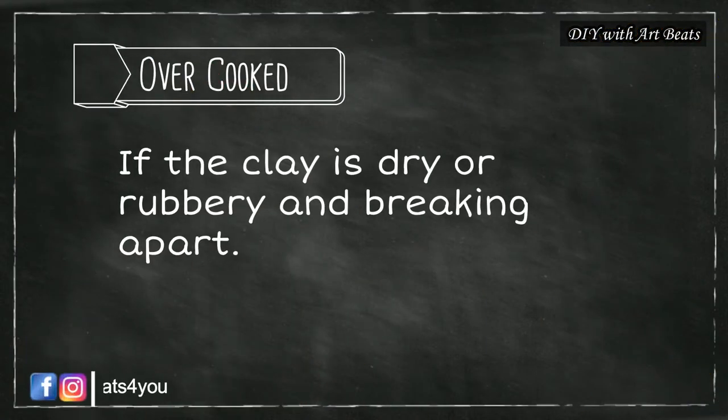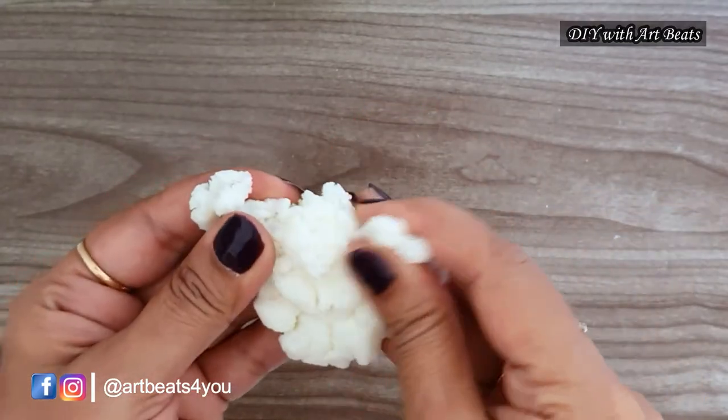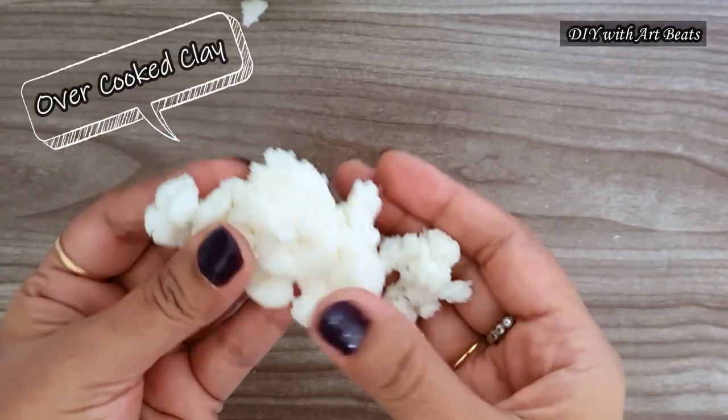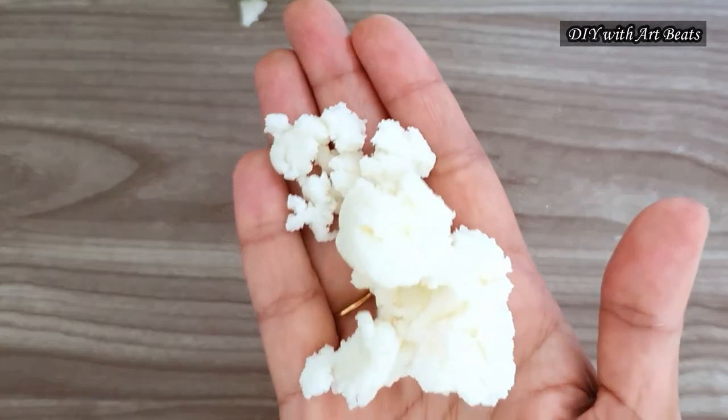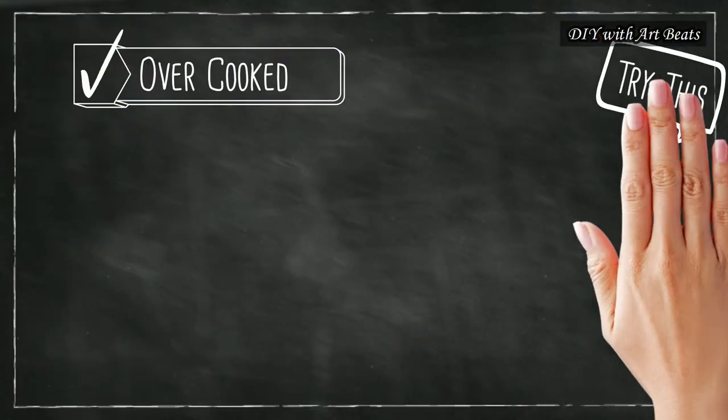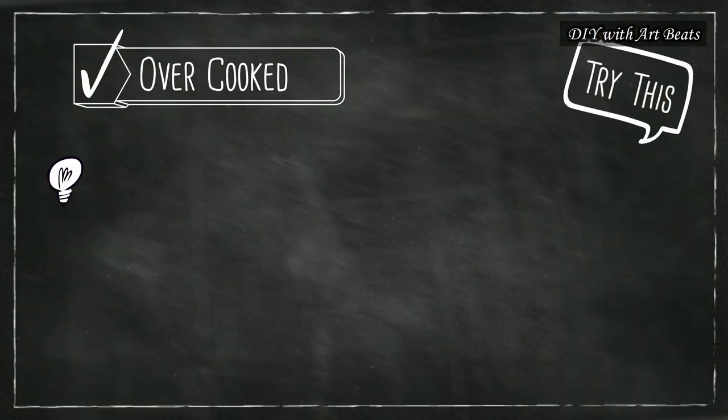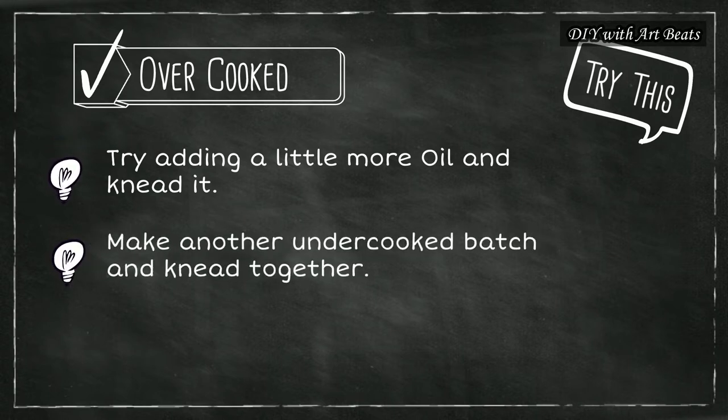If you overcook the clay it will become dry and rubbery like this. This was my first trial of the cooked cold porcelain clay which got overcooked and it became dry and rubbery and breaking like this. If your clay is overcooked then you can try adding a little more oil and knead it again, or you can make another batch of undercooked clay and mix it with an overcooked batch.